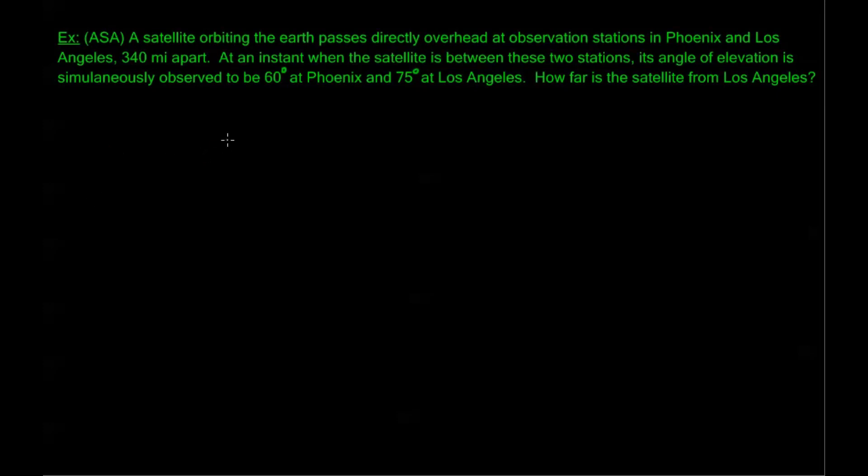So first, let's take a look at an example of ASA. Now a satellite orbiting the Earth passes directly overhead at observation towers in Phoenix and Los Angeles, 340 miles apart. At an instant when the satellite is between these two stations, its angle of elevation is simultaneously observed to be 60 degrees at Phoenix and 75 degrees at Los Angeles. How far is the satellite from Los Angeles at this instant? So what we're going to want to do is we're going to want to draw out our triangle. Let's call this angle A. We'll call this top angle B, and we'll have this over here be angle C.